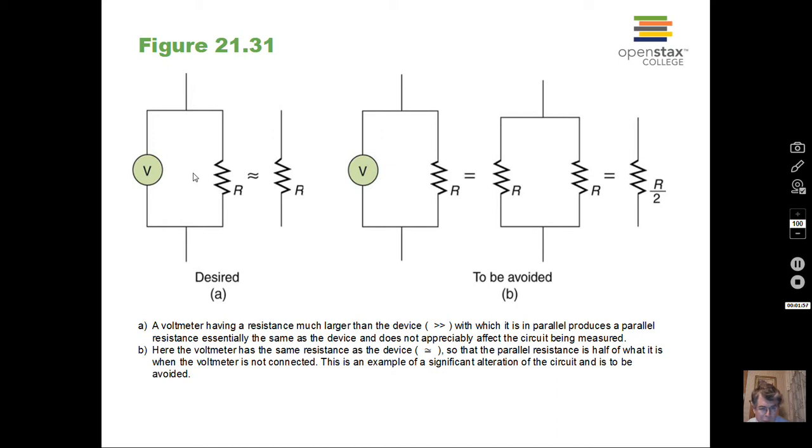So when we have a circuit, we want to take measurements in that circuit without disturbing the circuit. We want the circuit to work as it had before we tried to make a measurement. When we use a voltmeter, you'll always put the voltmeter in parallel with the object that you're working with.